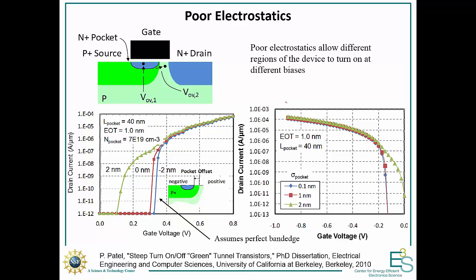Another very practical challenge that has killed a lot of experimental devices is poor electrostatics. If you have graded or non-uniform doping, different regions of your device turn on at different biases. For instance, in a simulation of an older pocket T-FET structure, where you'd implant an N-plus pocket to get vertical tunneling and a sharp turn-on, if you don't align the two edges perfectly, you get different regions turning on at different currents — a very gradual rather than sharp turn-on. Getting your electrostatics wrong even slightly can destroy the device performance.